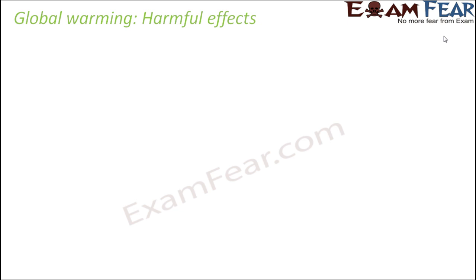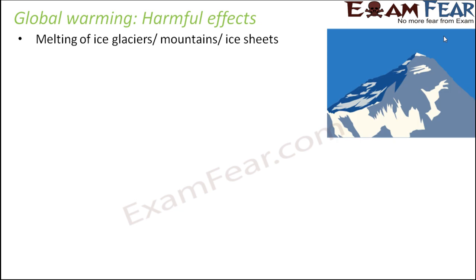The harmful effects of global warming are also huge. When the average temperature of the earth increases, the melting of ice glaciers, mountains, or ice sheets is inevitable. This melting results in destruction of living organisms and the ecosystem of those regions, because a huge number of living organisms survive in these ice glaciers and mountains, and when these regions melt down, all those organisms will also get lost.